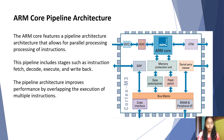The ARM core features a pipeline architecture that allows for parallel processing of instructions. This pipeline includes stages such as instruction fetch, decode, execute, and write back.